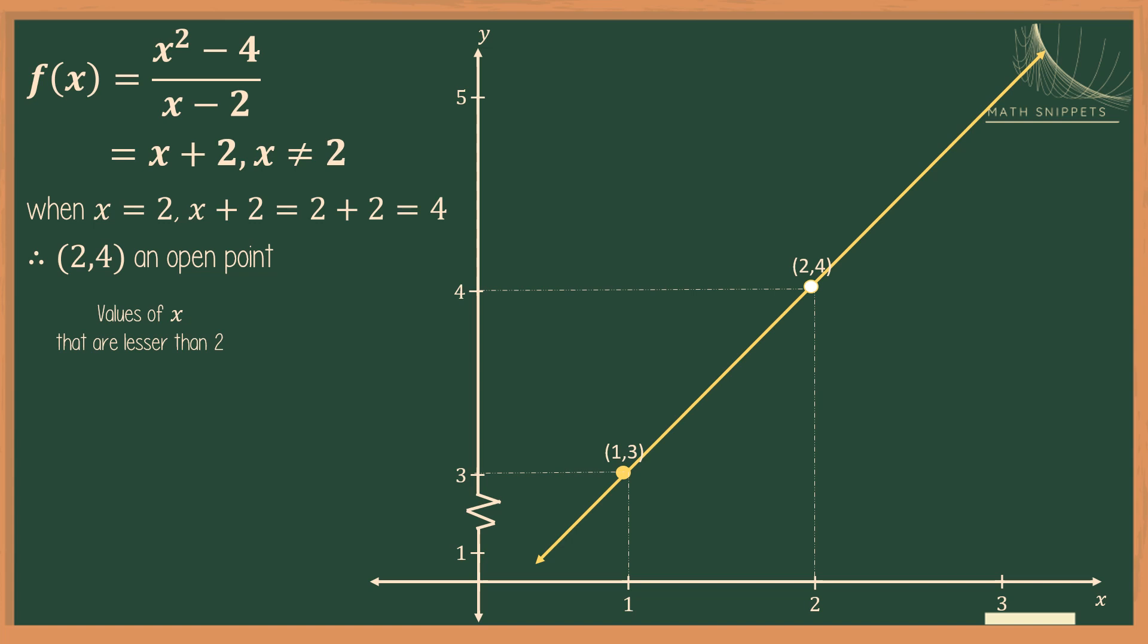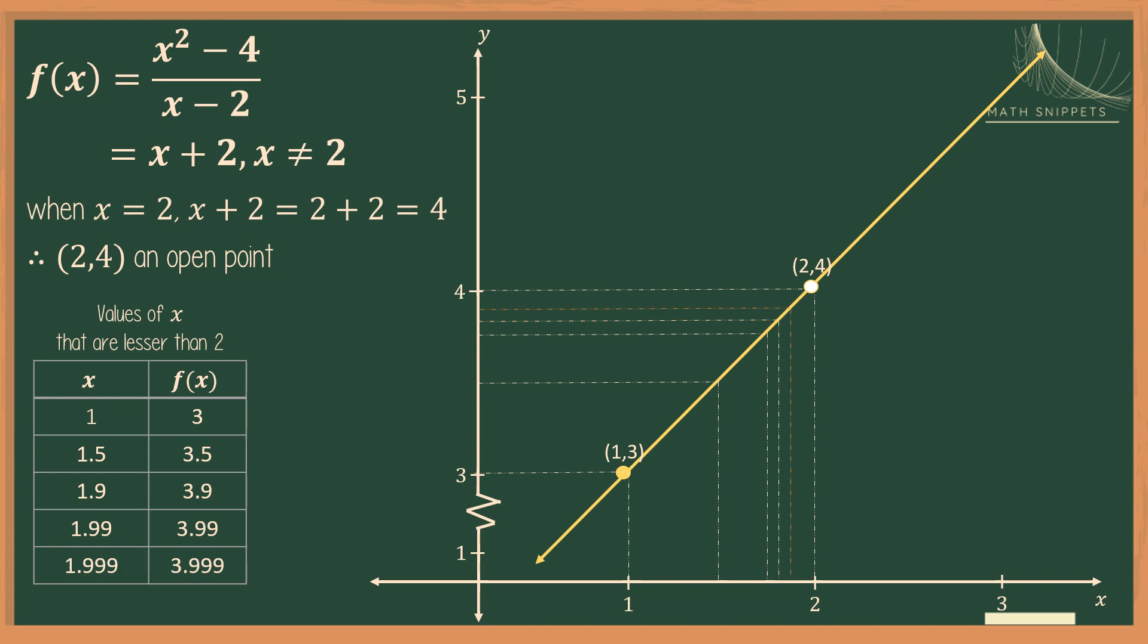Now, let's try to look at the behavior of the point on the graph as the values of x move closer to 2 from values that are less than 2. So when x is 1, we get a function value equal to 3. When x is 1.5, we get 3.5. Observe the direction of the points. When x is 1.9, we get 3.9. So what happens? As our x's move closer and closer to 2, the points on the graph are also getting closer and closer to 0.24. So therefore, the values of our x move towards 4.